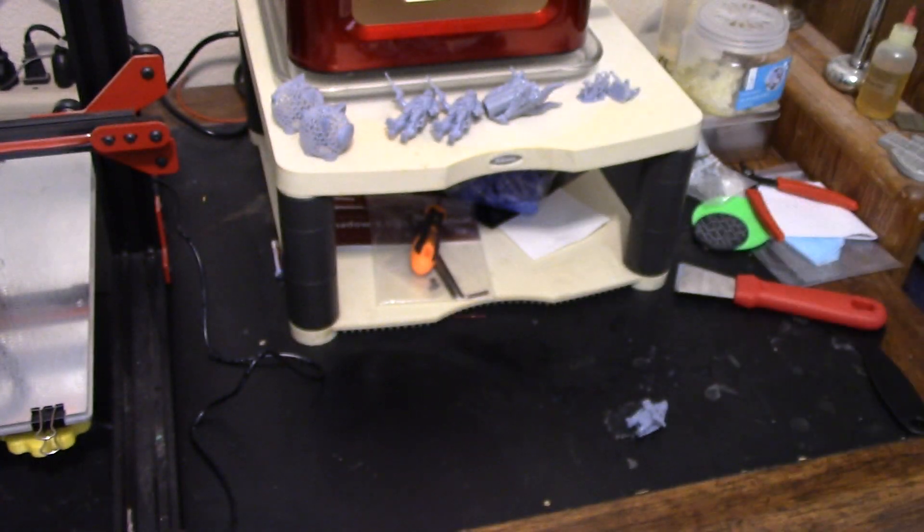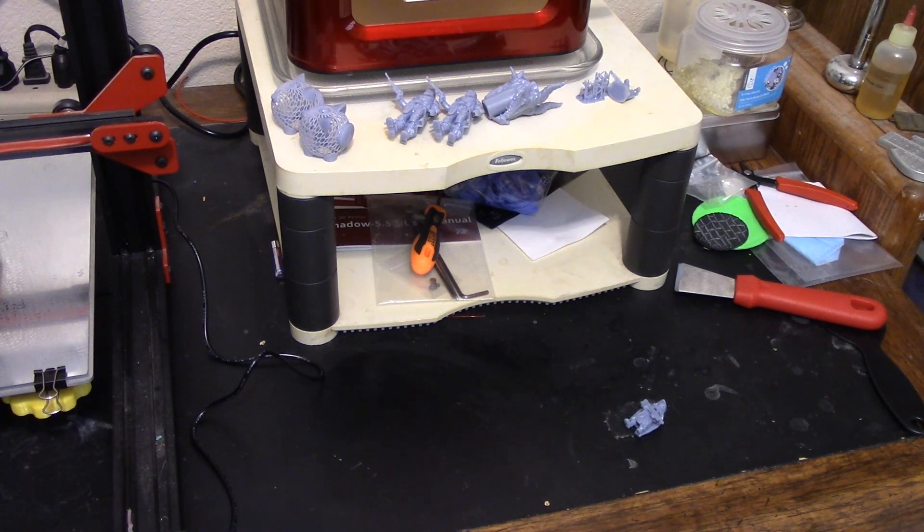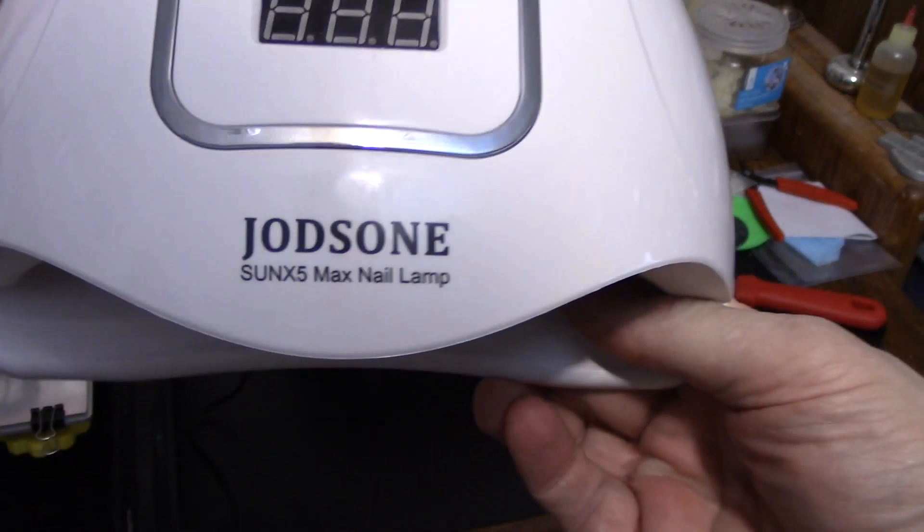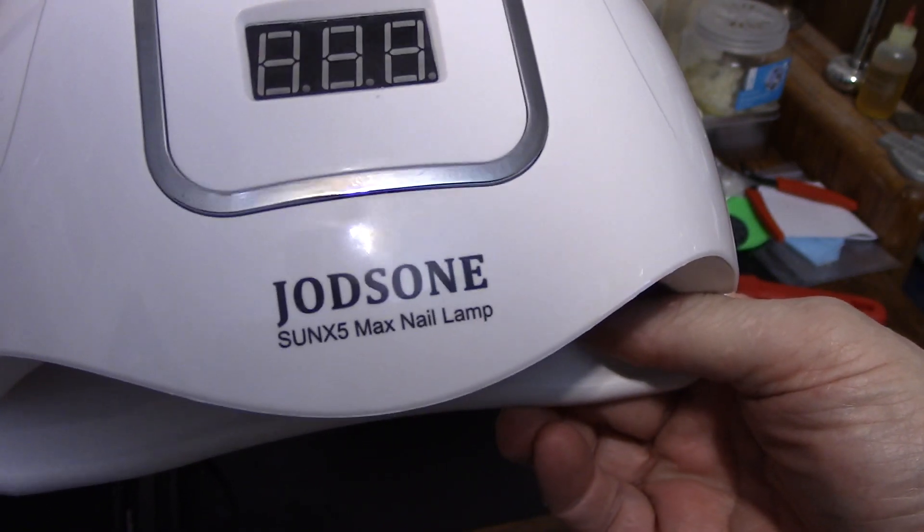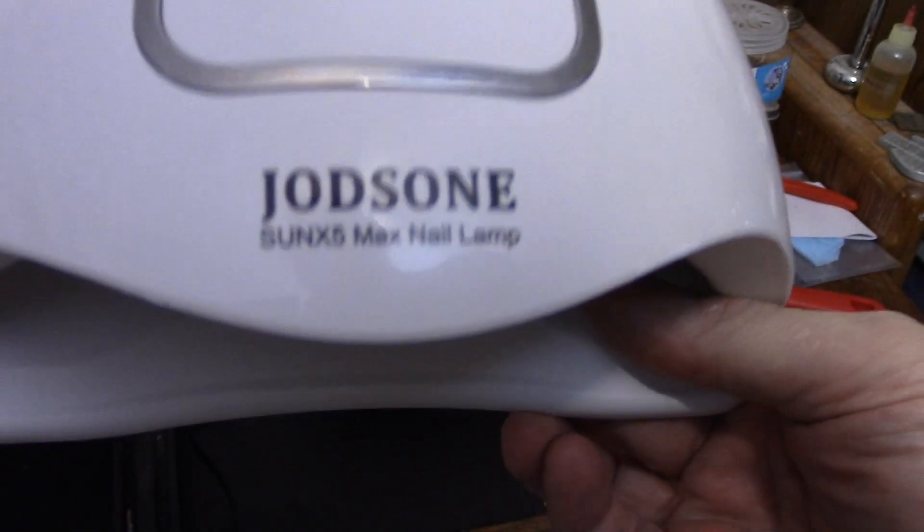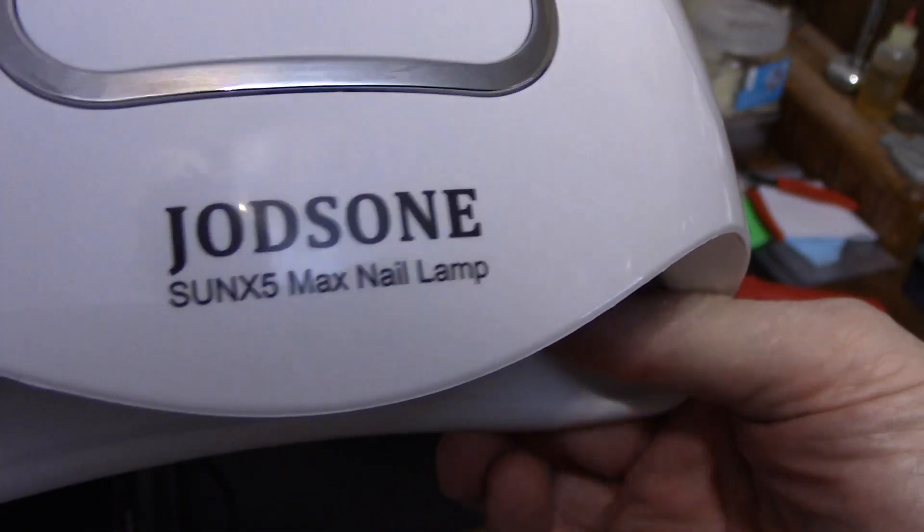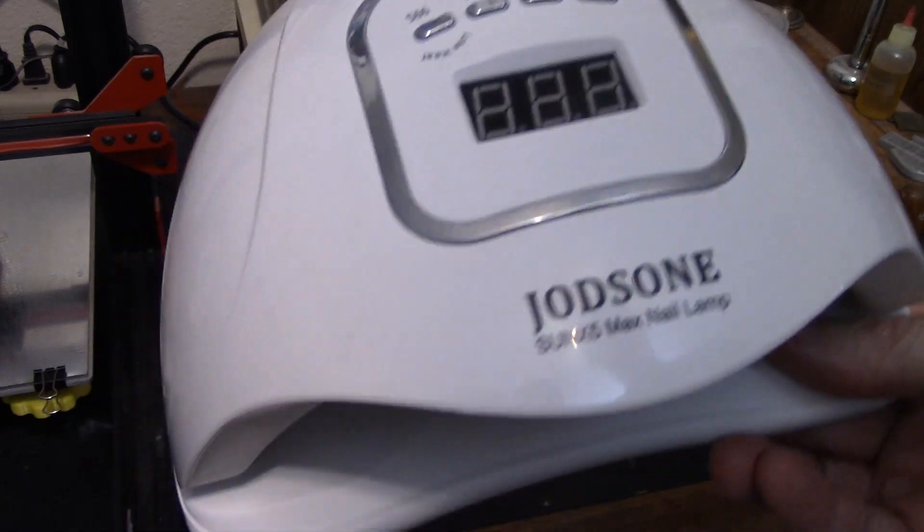And this is what I decided to use for curing. And I've seen other people do it. I don't claim to be the first guy to think of this. But, and I got this off Amazon, this is a Jody Sony, Jodson, I don't know, you guys figure it out for me. It is a Sun X5 maxi nail lamp. It is the kind of thing, if you're putting gel fingernails on, you stick your fingers under this, and it dries them.